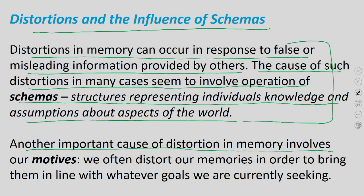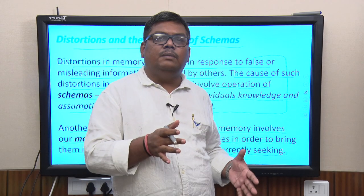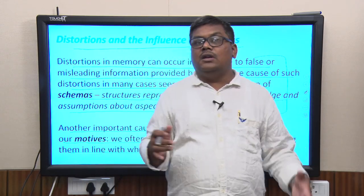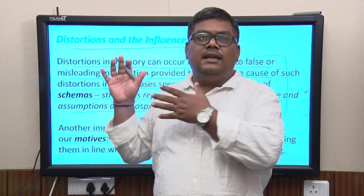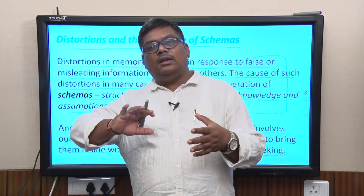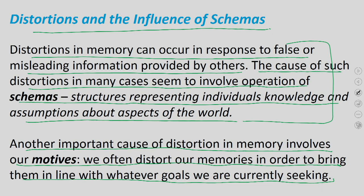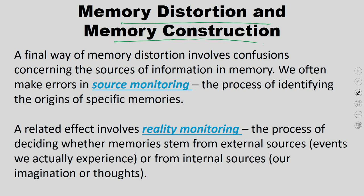Another cause of distortions involves our motives — we often distort memories to bring them in line with our current goals. For example, if rejected by a friend, one might remember the event in an entirely different, more favourable way — creating two versions of the actual memory. A final form of memory distortion involves confusion concerning the sources of information in memory: sometimes we do not know where the memory came from or who provided it.